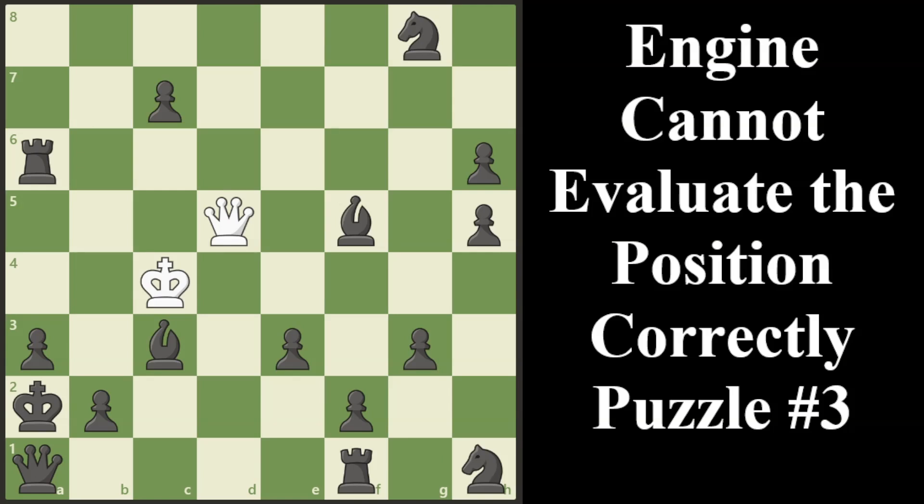I titled this position Engine Cannot Evaluate the Position Correctly, Puzzle Number 3. I've already put out two other videos on the channel dealing with chess engines that can't find the correct move or maybe have mis-evaluated the position. So I'm going to lump this third video into a series called Engine Fails, where there appears to be a bit of a glitch with the engine on that particular position. I selected this puzzle position from a chess book I own and I picked it for several reasons other than the obvious engine mis-evaluation.